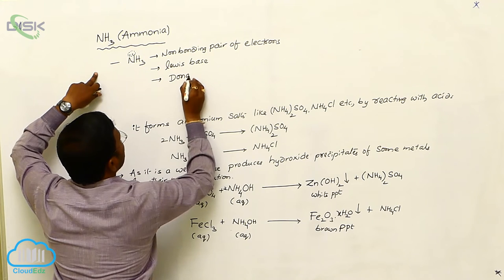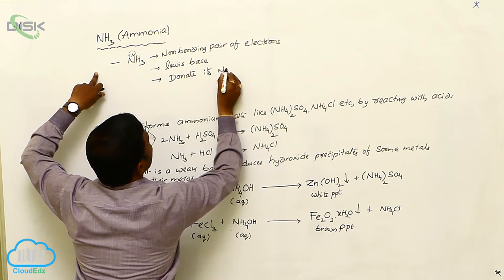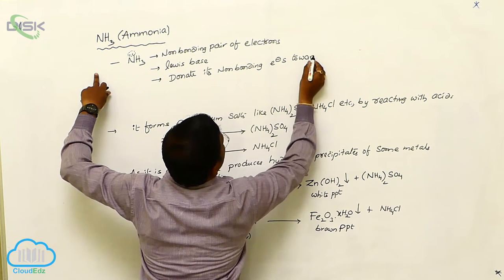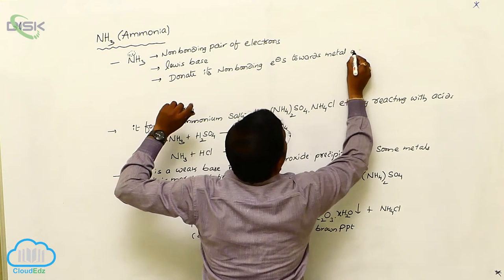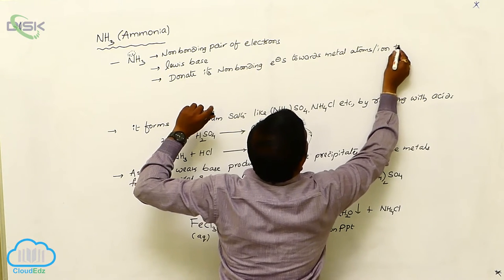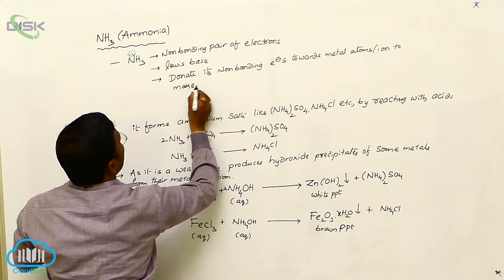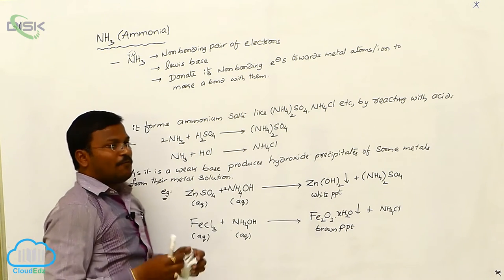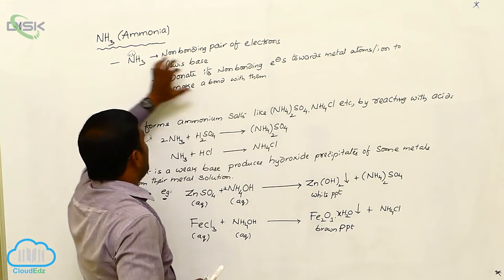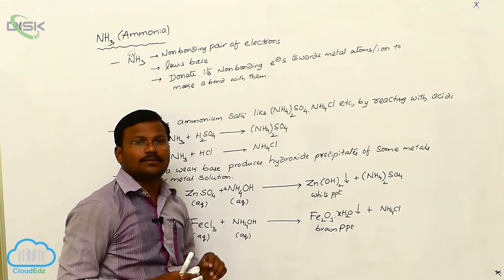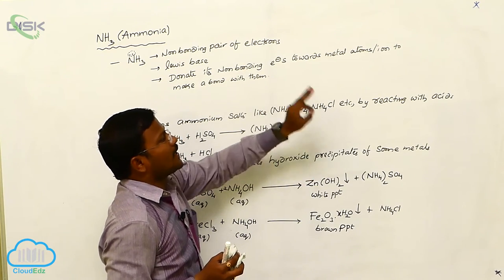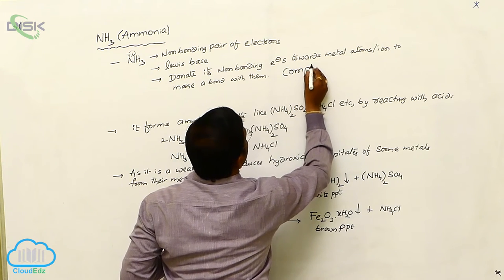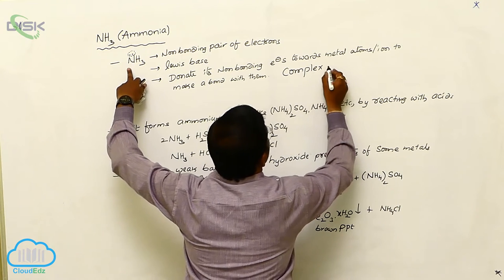Ammonia donates its non-bonding electrons towards metal atoms or metal ions to make a bond with them. By forming bonds with metal atoms or metal ions, ammonia can work as a ligand. By donating its non-bonding pair of electrons to different metal atoms and metal ions, it forms complex molecules.